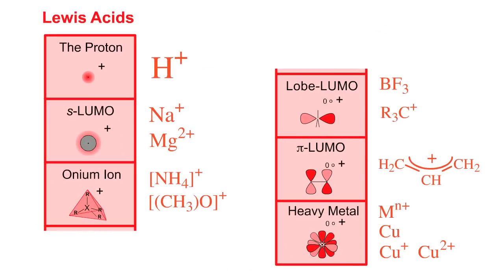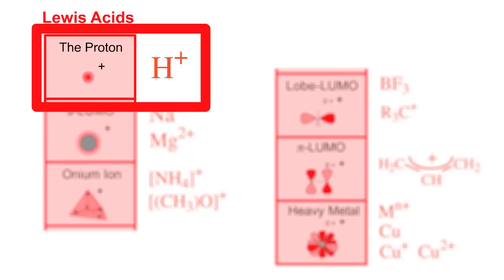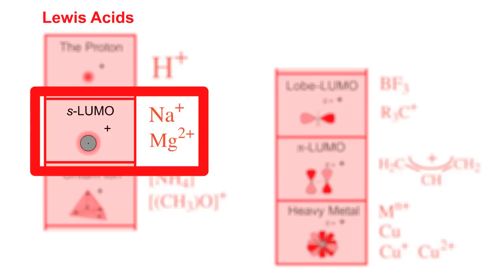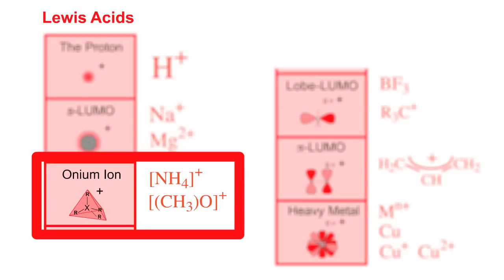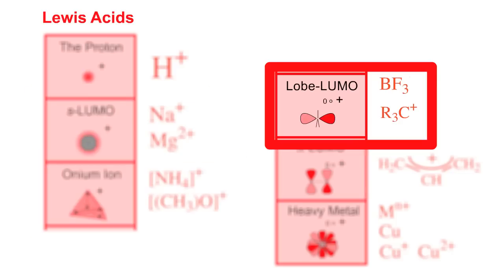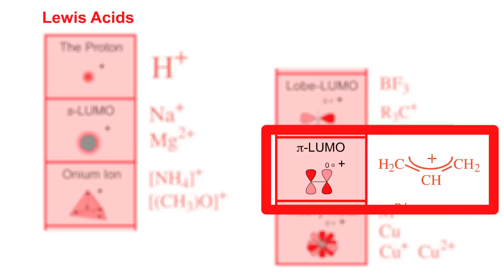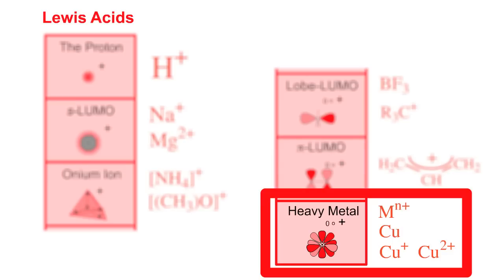Lewis acids. There are six types of Lewis acid. First, we have the proton H+. S-LUMO Lewis acids such as sodium ion and magnesium ion. Onium ion Lewis acids such as the ammonium ion and the trimethyl oxonium ion. Lobe-LUMO Lewis acids such as boron trifluoride and carbenium ions. Pi-LUMO Lewis acids, which are electron-poor pi-systems, including the allyl cation. And heavy metal Lewis acids — the heavy metals and heavy metal cations such as copper and copper ions.